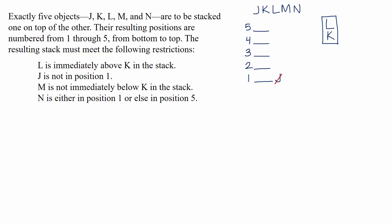The third rule tells us that M is not immediately below K in the stack. We can illustrate this similarly to rule one, except this time we put a line through it to show that this situation doesn't happen — M below K, with a line through it to show it can't ever happen this way. Finally, the fourth rule tells us that N is either in position one or else in position five. Just like rule two, we can mark this directly into our diagram using arrows.